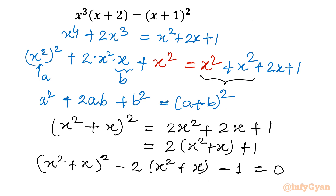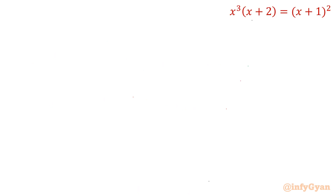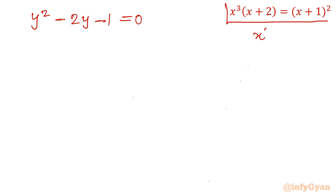Now you can see easily this is a quadratic equation, but in (x² + x). So I will let x² + x equal to y. The equation will become y² minus 2y minus 1 equal to 0. Remember our substitution was x² + x equal to y — we will use that a little later.